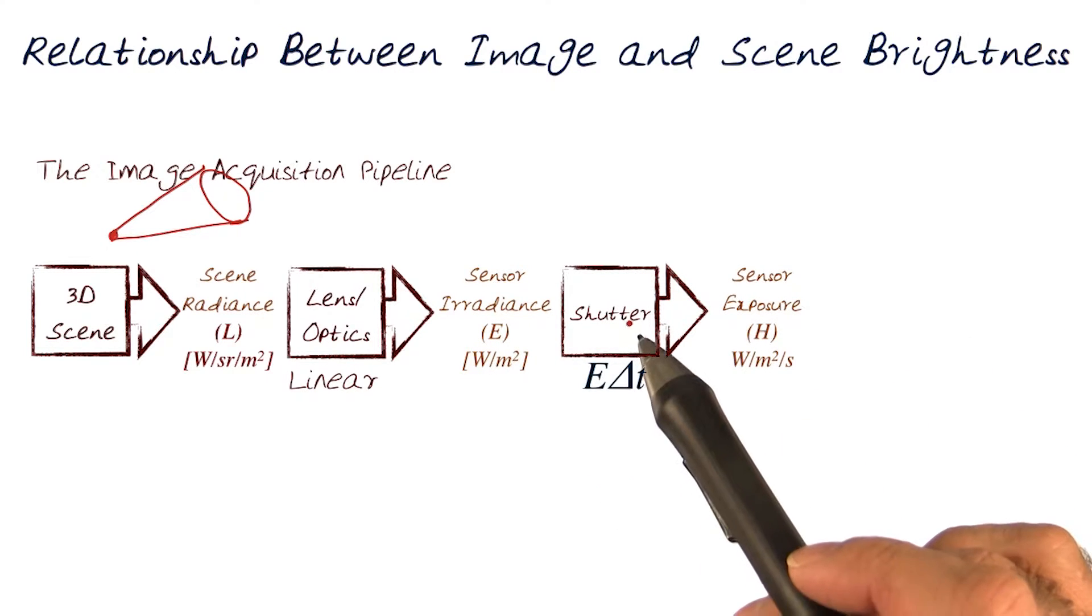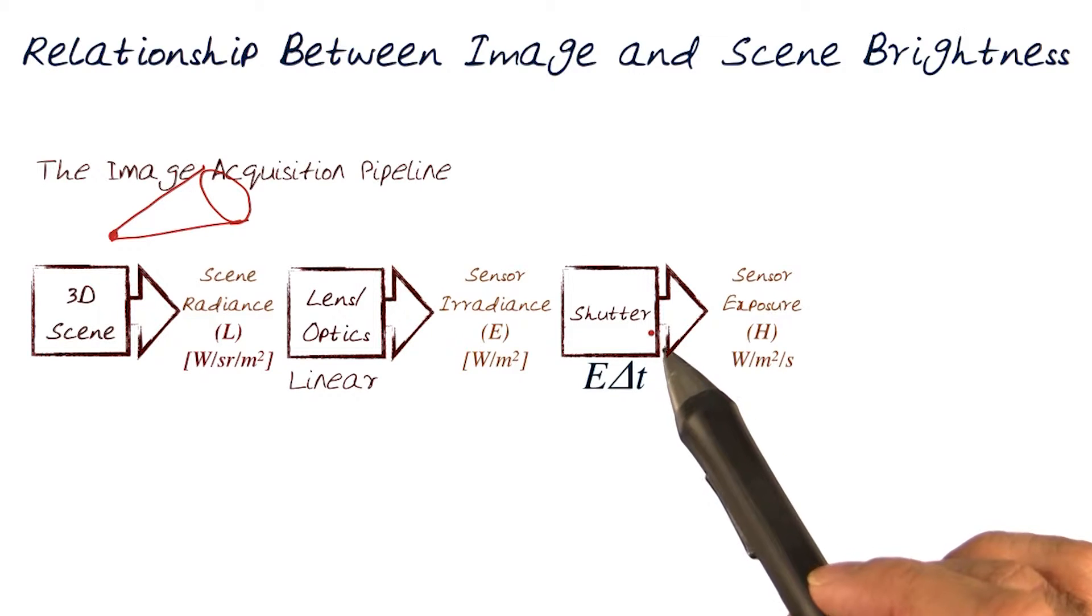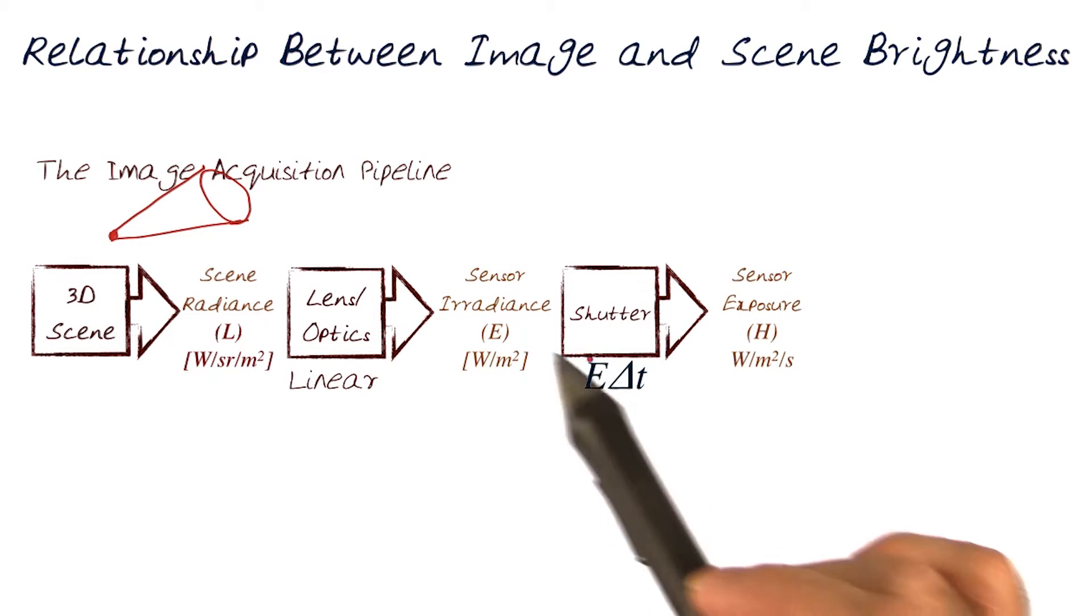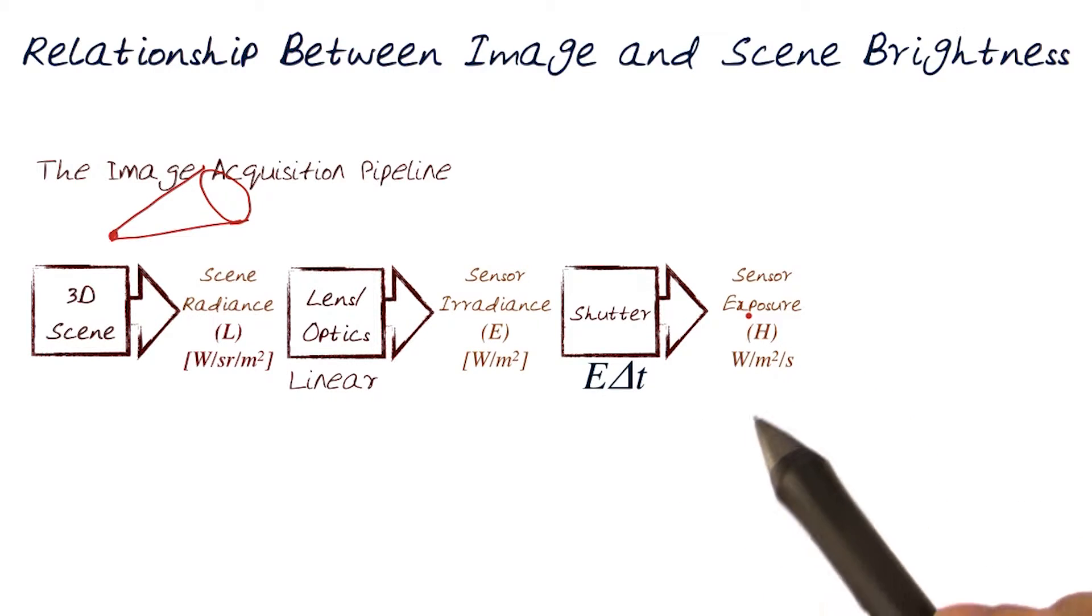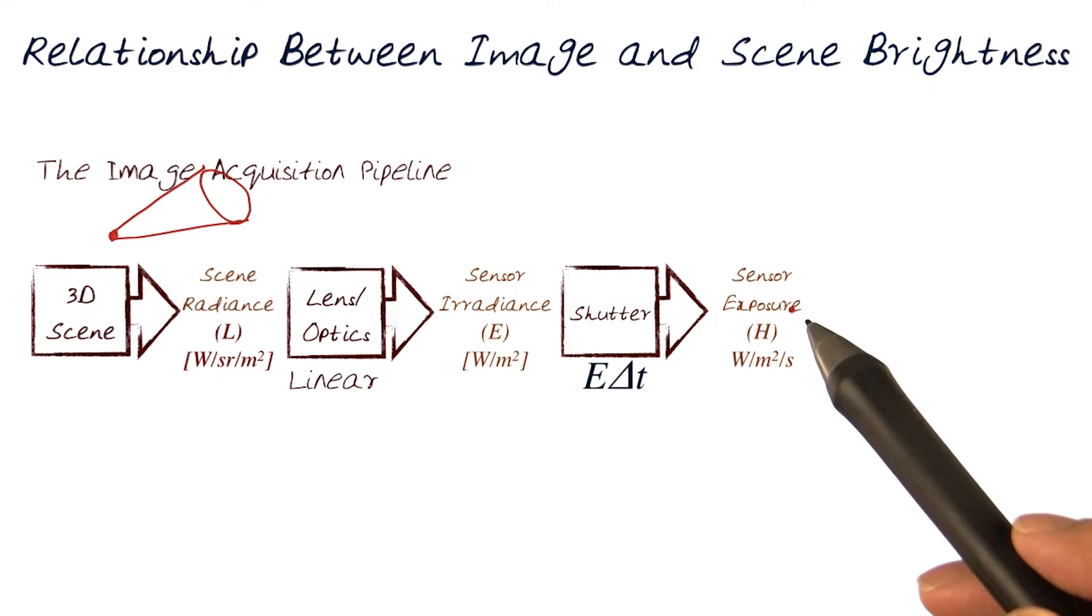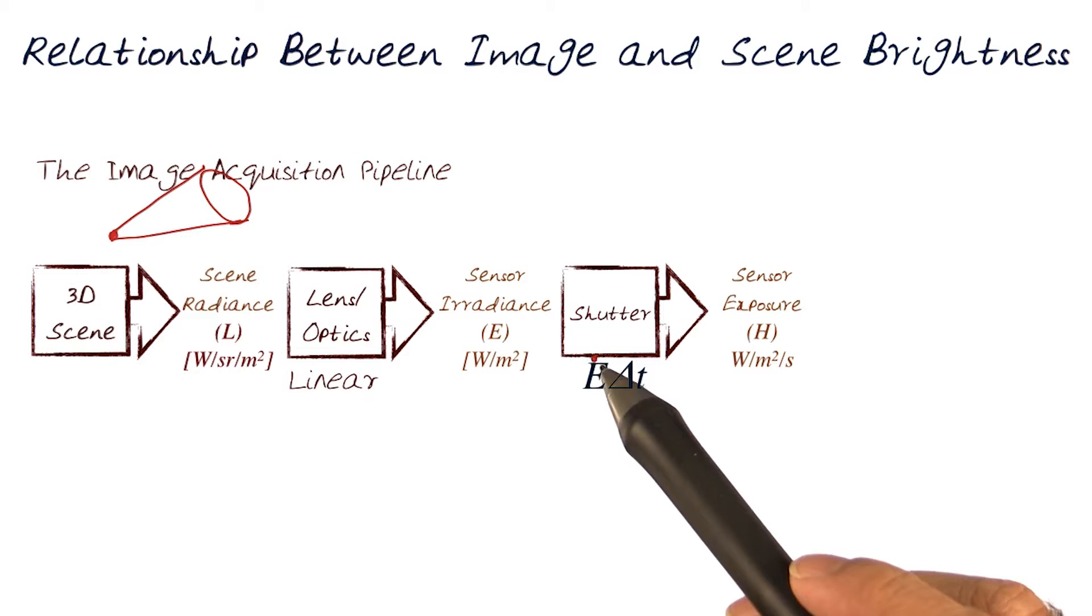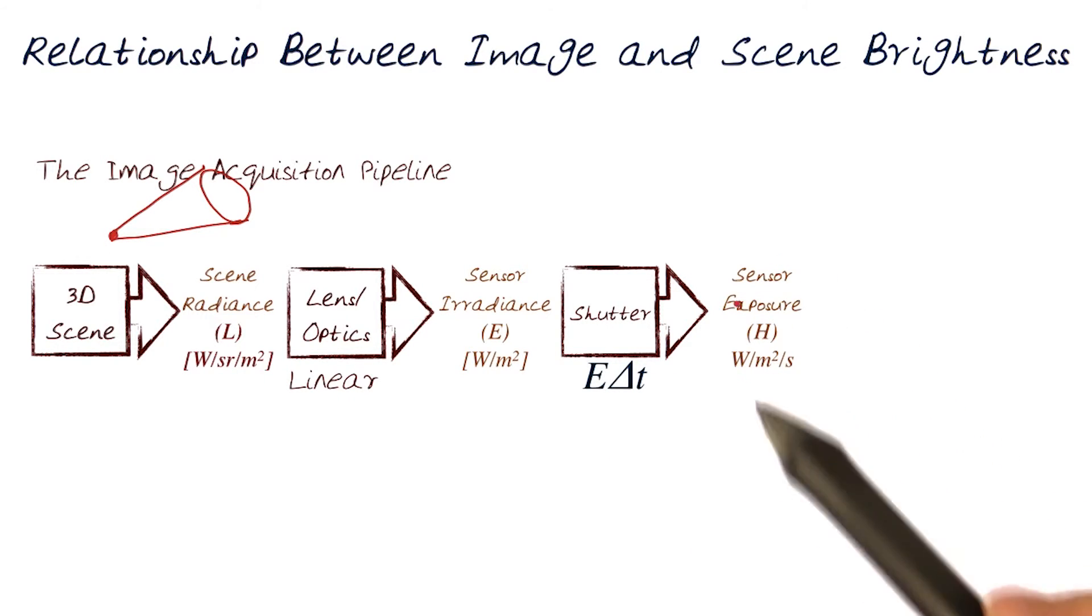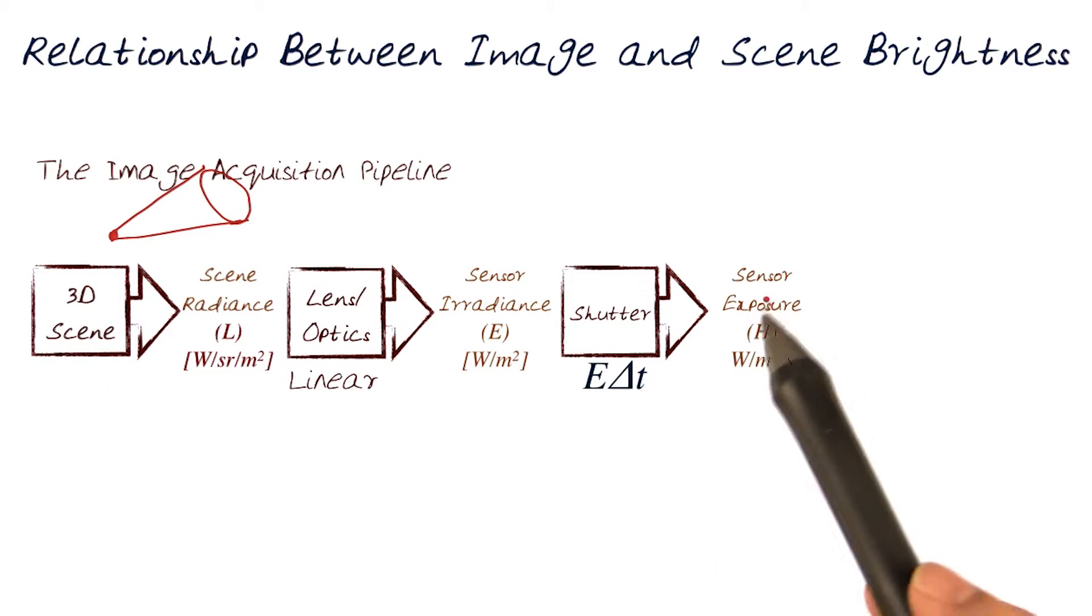Next stage in the pipeline is the shutter, because shutter is the amount of time light is allowed into my sensor. E times delta T gives us the information towards getting the sensor exposure. We referred to the exposure as H, which was equal to the sensor irradiance times the amount of time the shutter was open. We're going from 3D scene, and now we're getting sensor information in the exposure values.